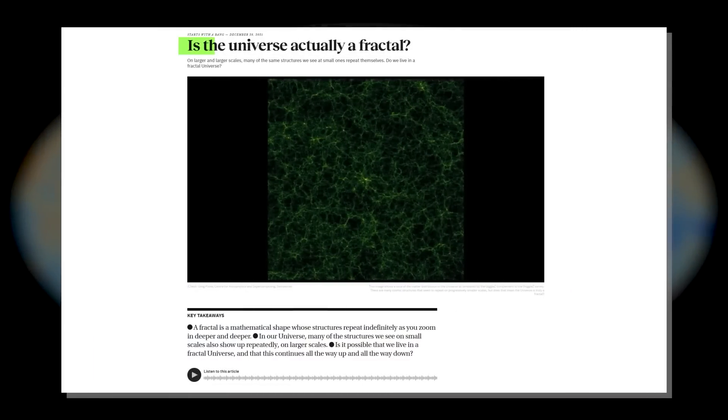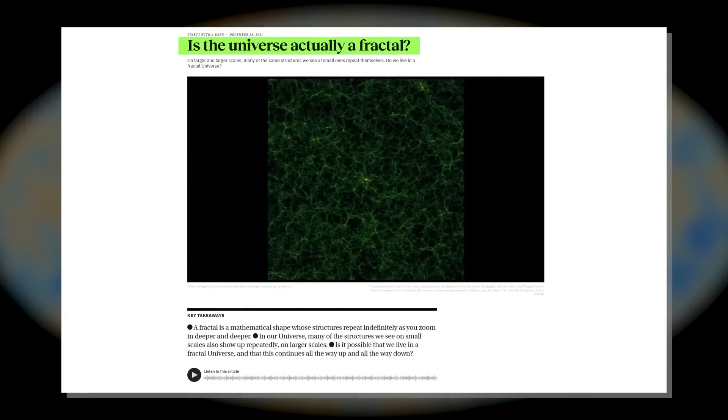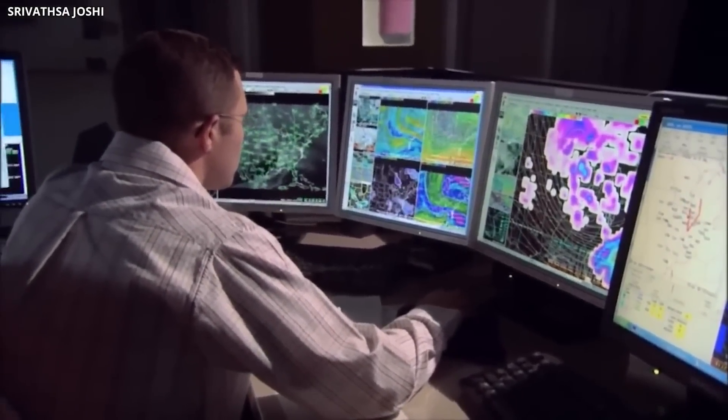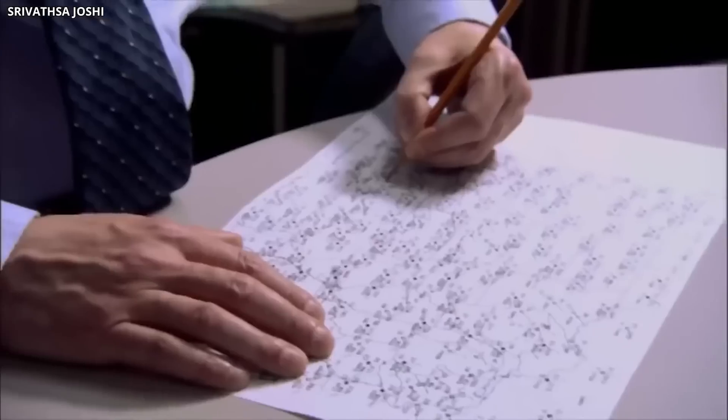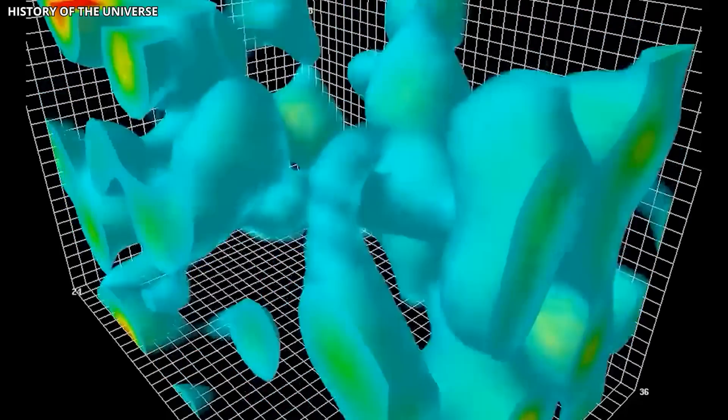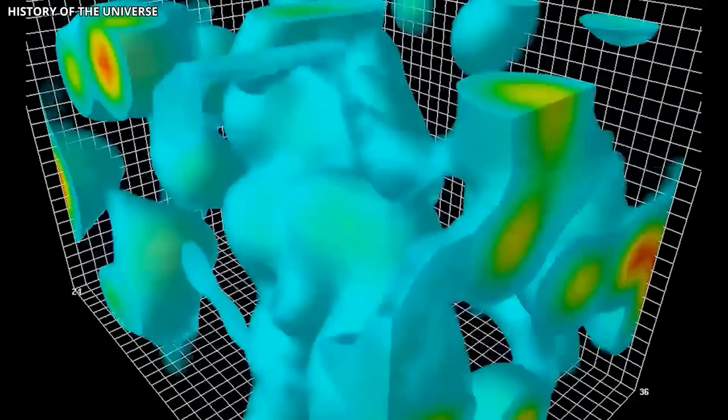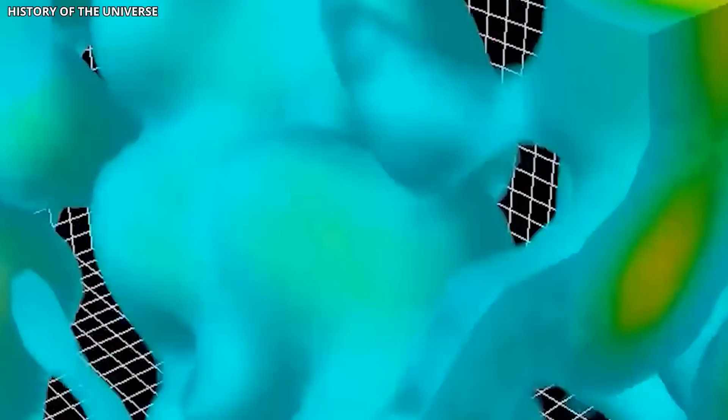When this phenomenon is reviewed mathematically, it is regarded as the concept of a fractal. If the same pattern keeps showing up at smaller and smaller scales, they are then analyzed mathematically and checked to see if they have the same statistical features as the larger structures. If they do, it's fractal-like.